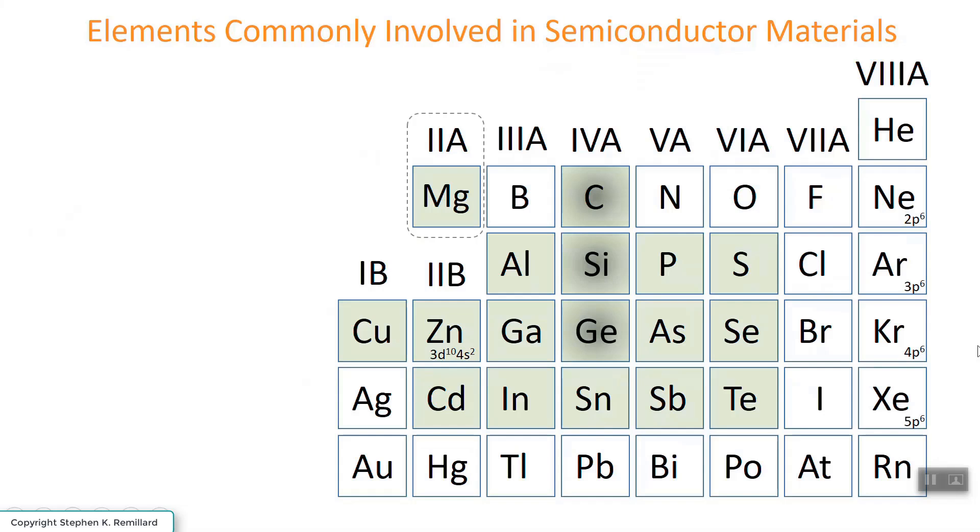You'll notice carbon, silicon, and germanium have a different shade of green because they're so commonly encountered as semiconducting materials, especially silicon and germanium. But I will list out all the elements here that can be semiconducting. Sulfur only in certain coordination, and tin only in the diamond crystal structure.